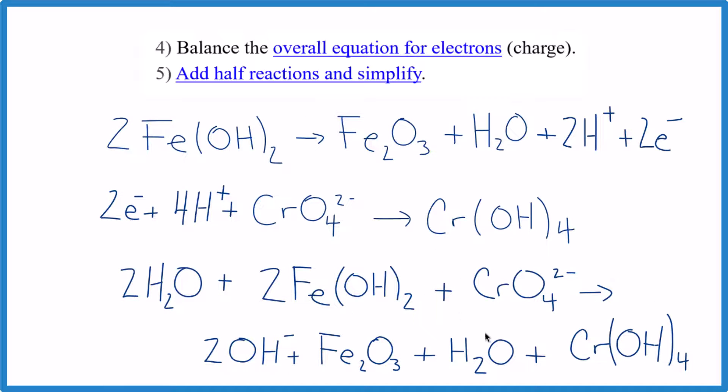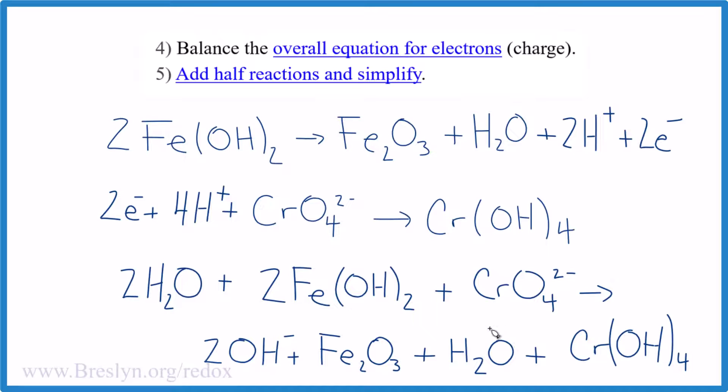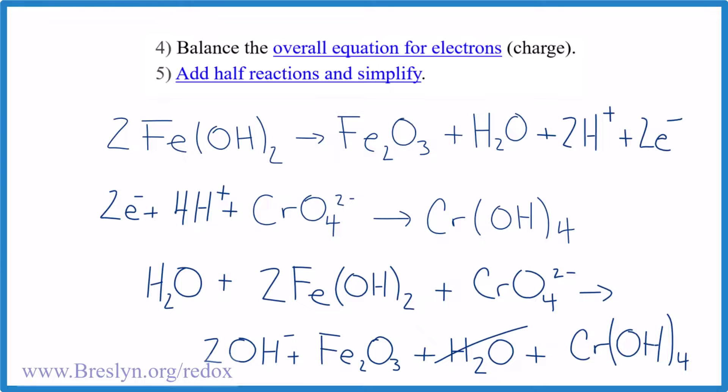And finally, since we have a water molecule down here and 2 up here, we need to get rid of this one and we'll just call this 1H2O. And now we're done balancing the redox reaction for FeOH2 plus CrO4 2 minus in both acidic. And finally, we did it in basic medium.